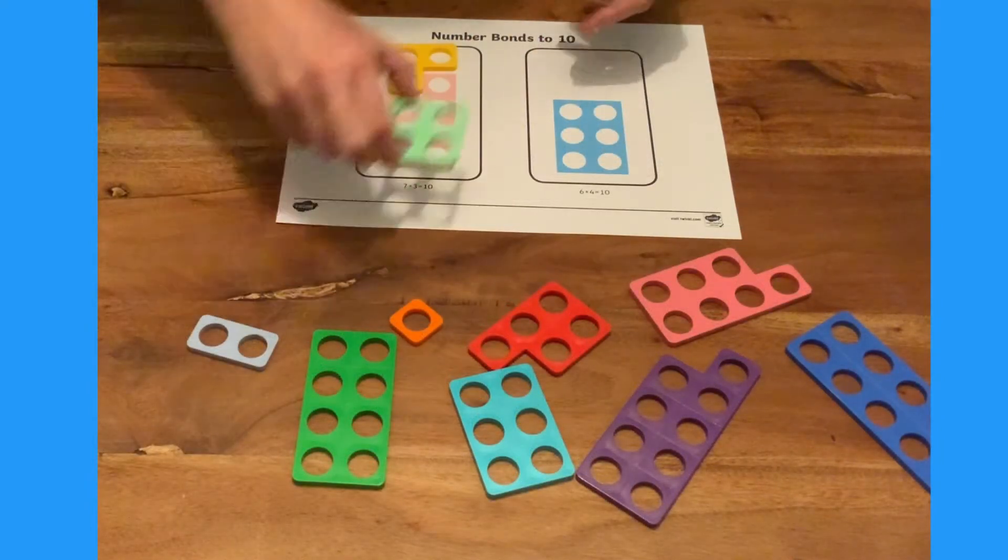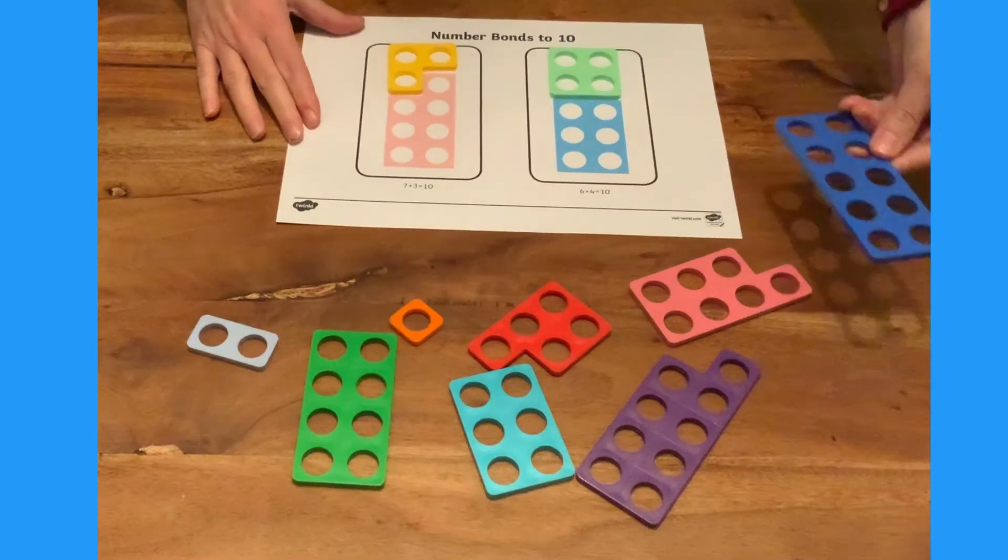Now what goes with six to make ten? It's four. Use the ten piece to check if you're correct.